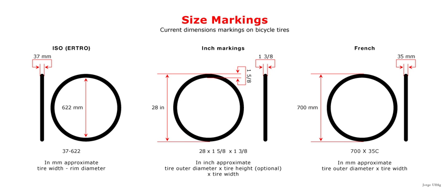ISO 5775-2 defines designations for bicycle rims. It distinguishes between straight side rims, crochet type rims, and hooked bead rims. Both crochet and hooked bead rims have inner profiles that curve inwards near the outside diameter of the rim to provide a hook that helps retain the tire bead under high pressure. On modern bikes, crochet rims are most common and hooked bead rims are rare. Hooked bead rims lack the defined bead seat of straight side and crochet rims, so the tire is held in position radially by the hook, and the governing diameter is the outside diameter.